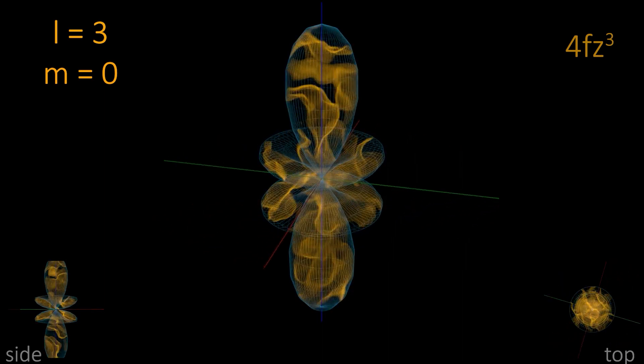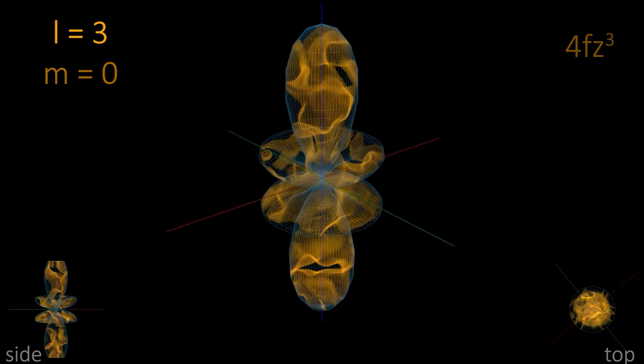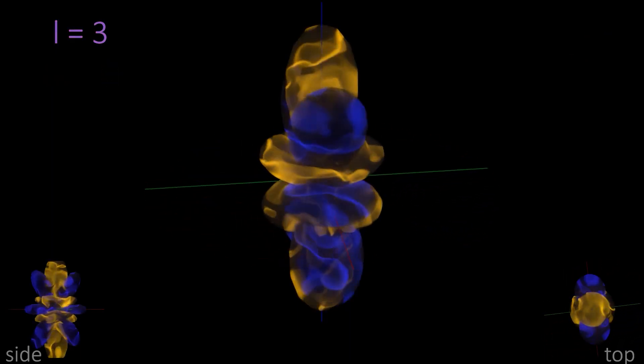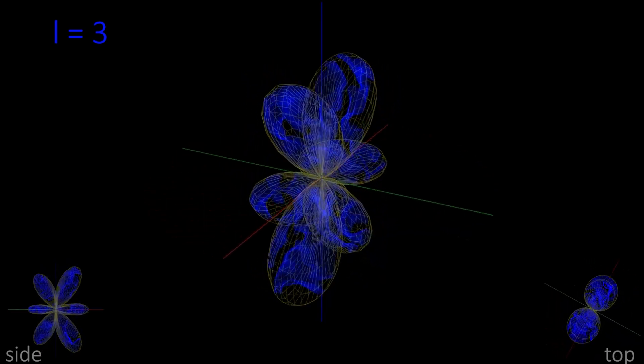Similar to the 3dz squared, this is an elongated polar shape, but with two lobes in the torus, or the donut around the middle. For magnetic quantum number M plus or minus 1, we have a familiar-looking d-shaped cloverleaf pattern, but now we have 6 lobes instead of 4.